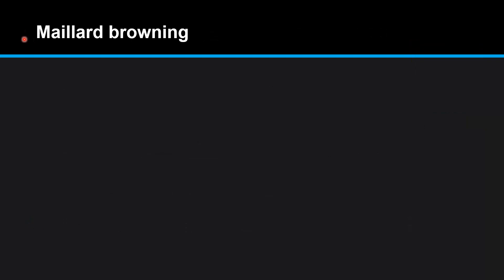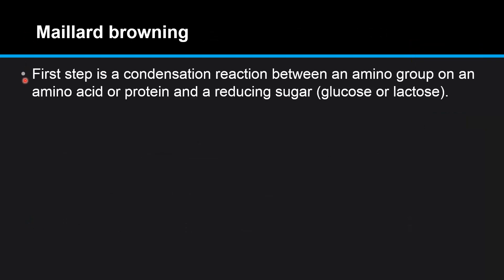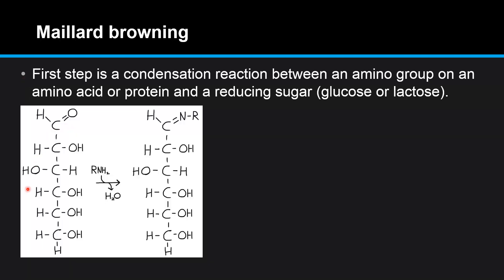First we look at maillard browning. The first step in maillard browning is a condensation reaction between an amino group on an amino acid or protein and a reducing sugar — glucose or lactose. Here we have the first step: this is a reducing sugar, in this case glucose, and here we have an amino group on an amino acid or protein, and we have a condensation reaction losing a molecule of water.